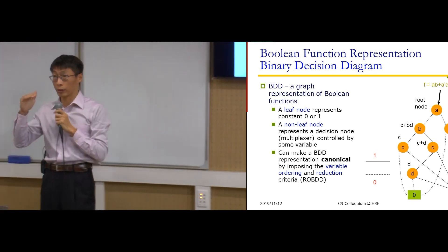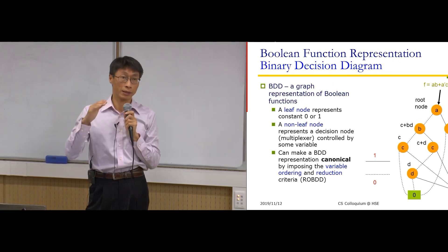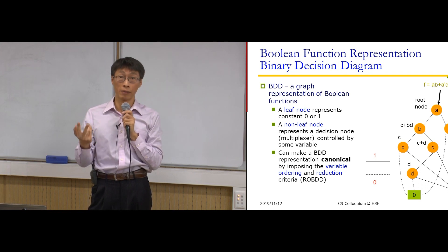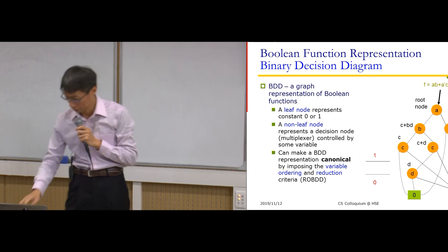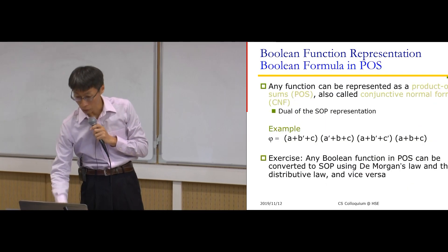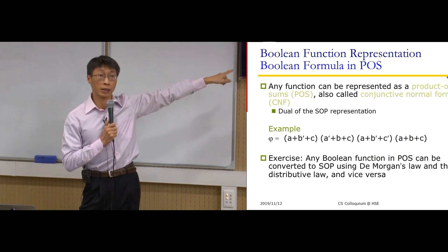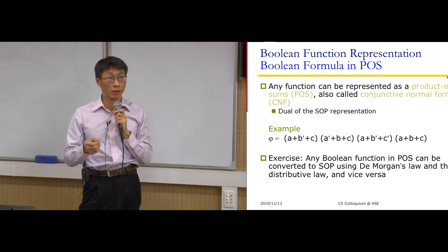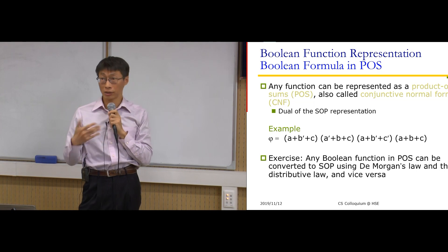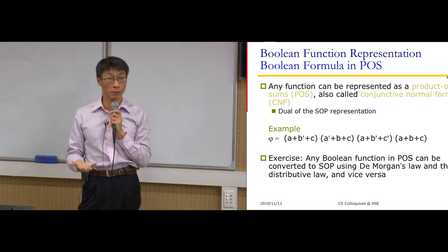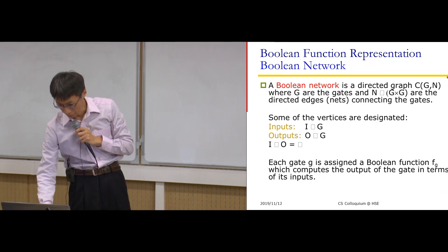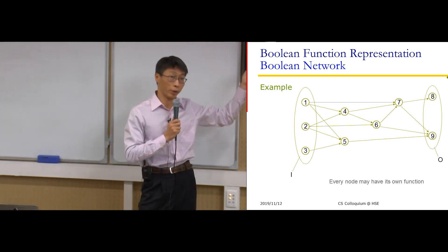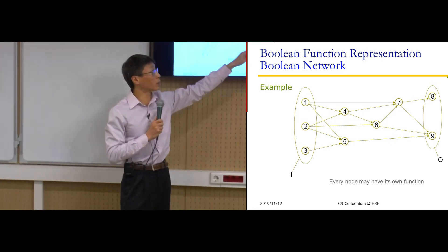There are rules that make BDD canonical, meaning two Boolean functions are the same if and only if they have the same data structure representation. However, sum-of-product and product-of-sum expressions are not canonical, because two identical functions do not necessarily have the same SOP or POS expression. The Boolean network is a general graph with input nodes, output nodes, and internal nodes each associated with some Boolean function.